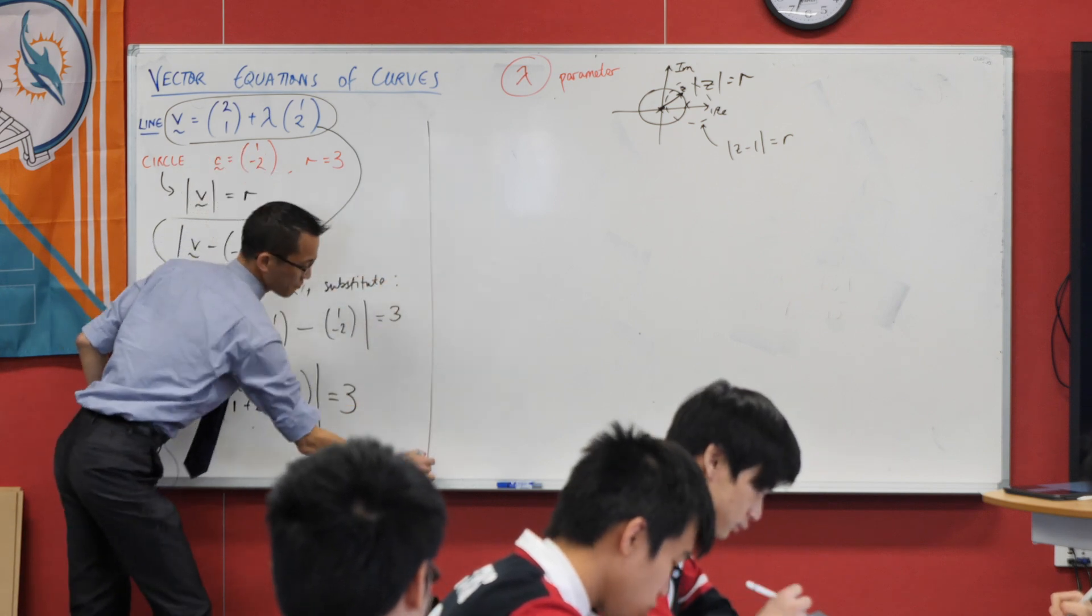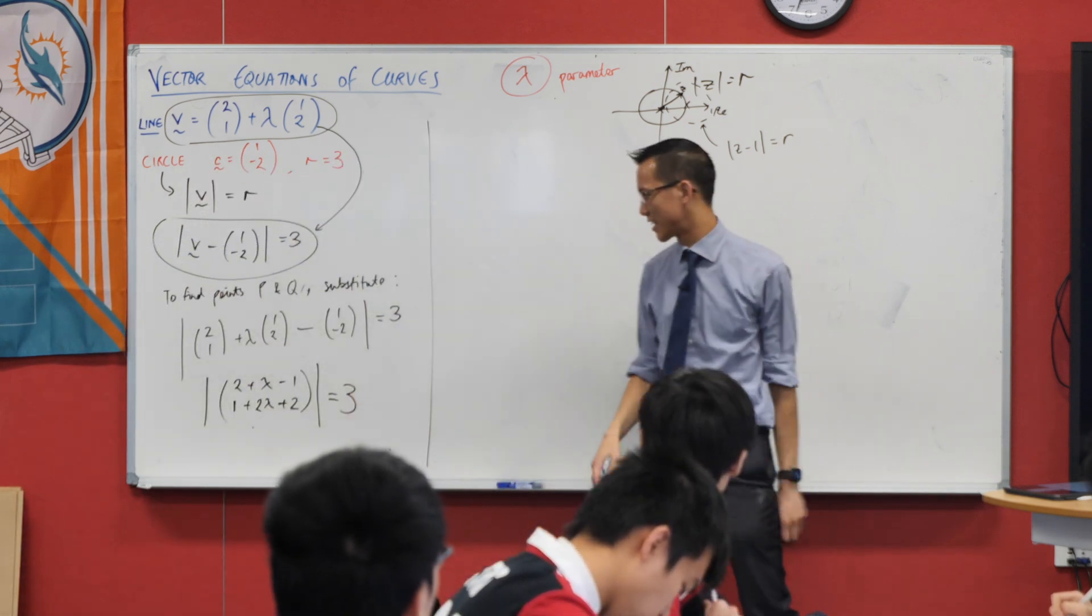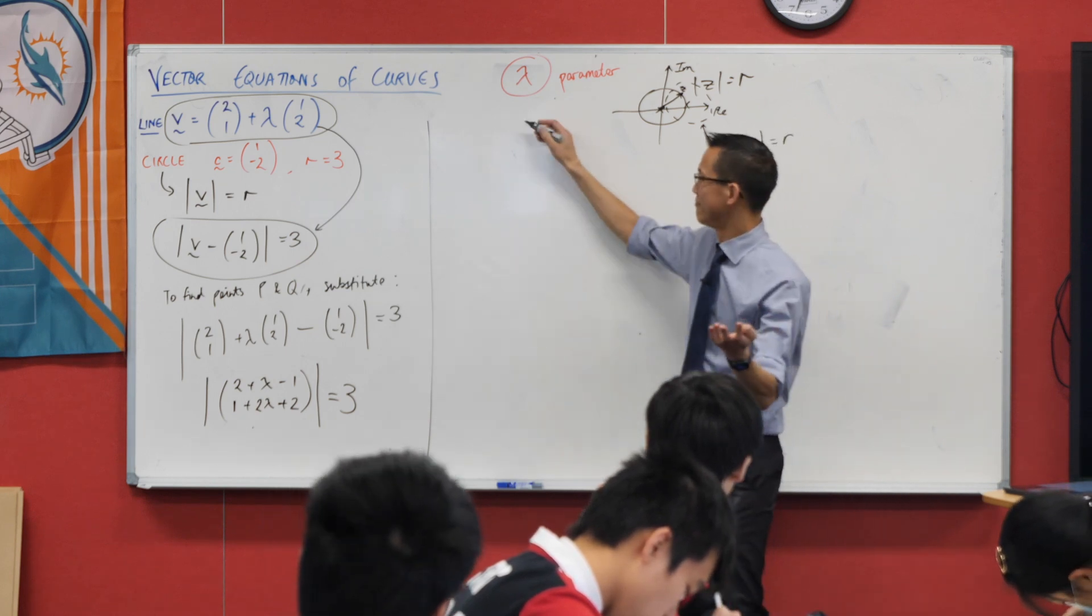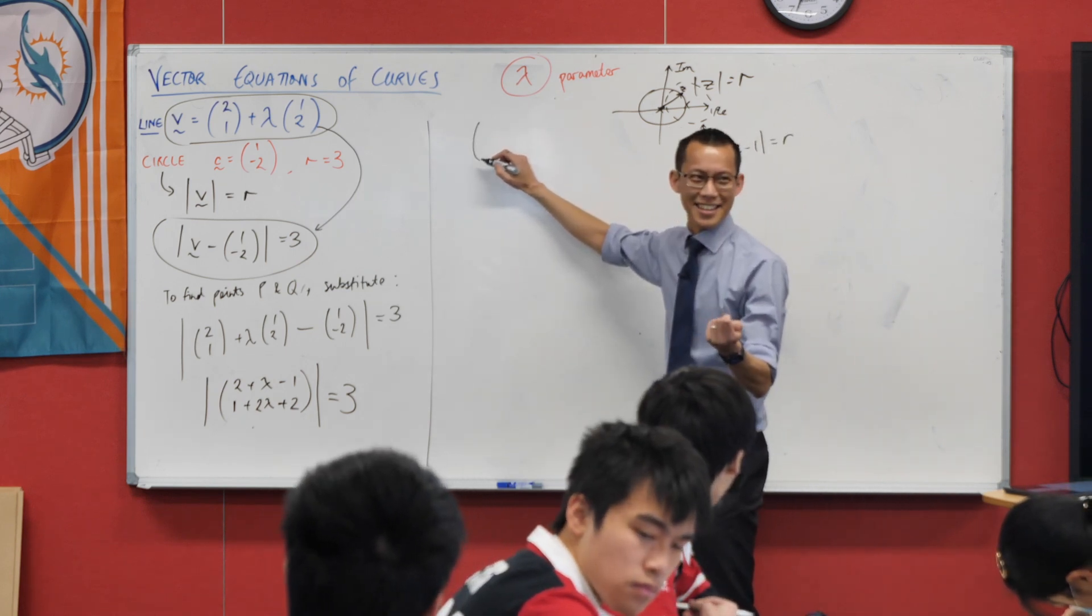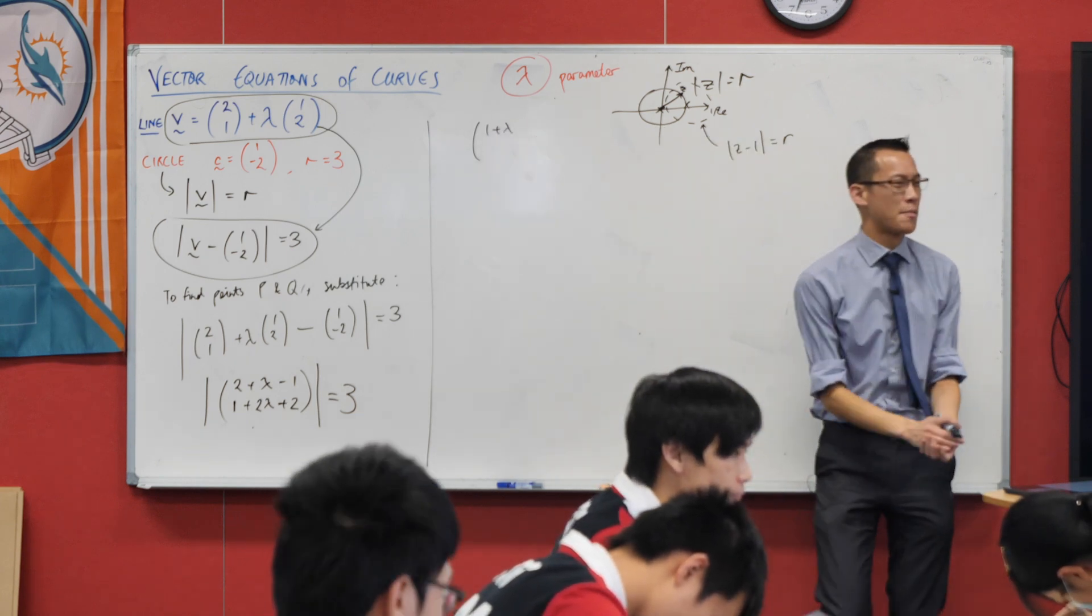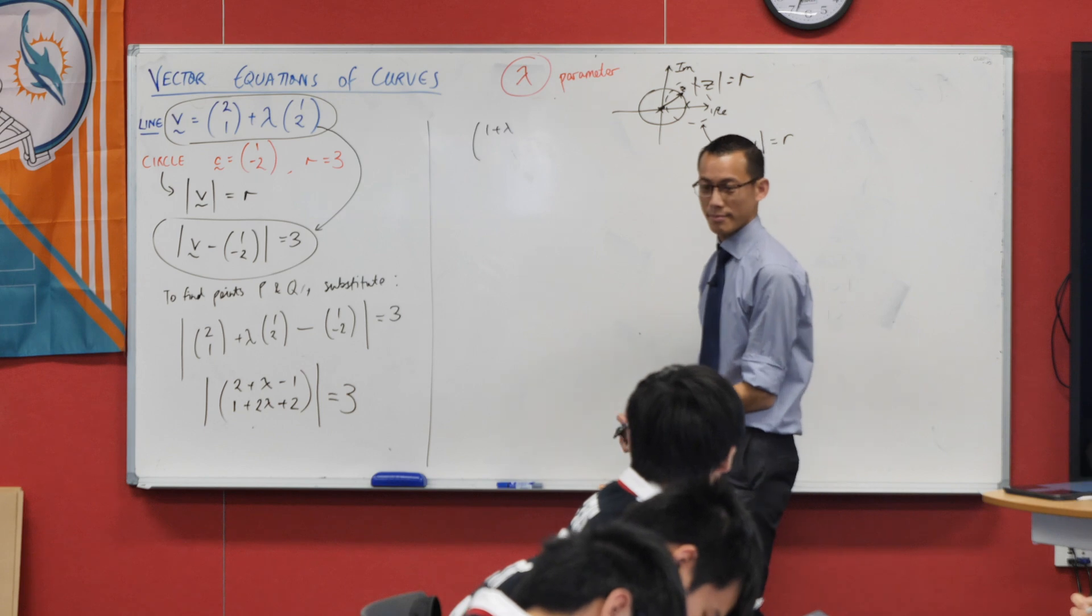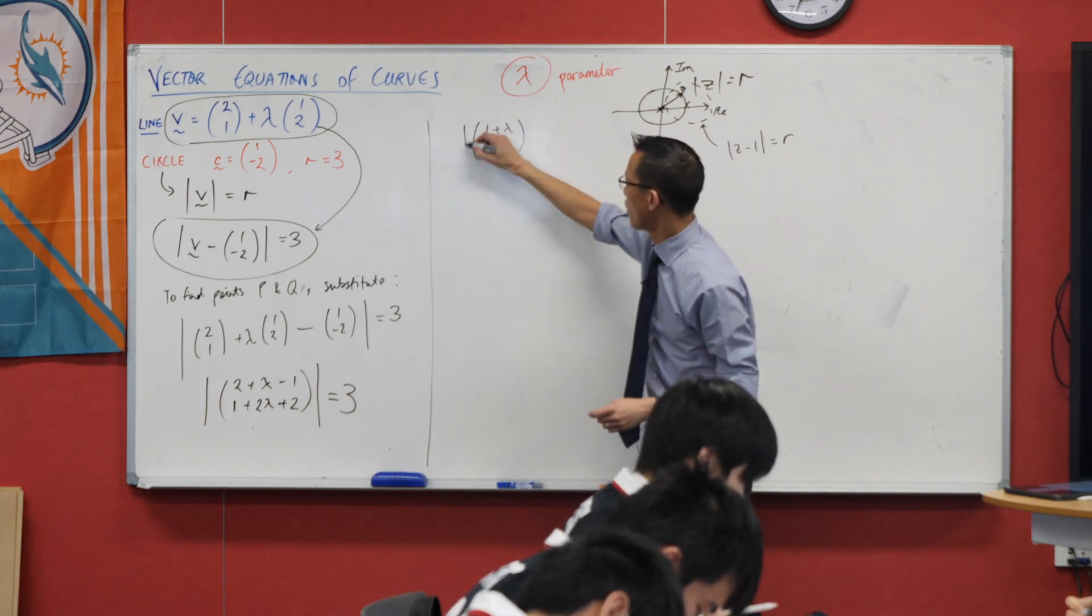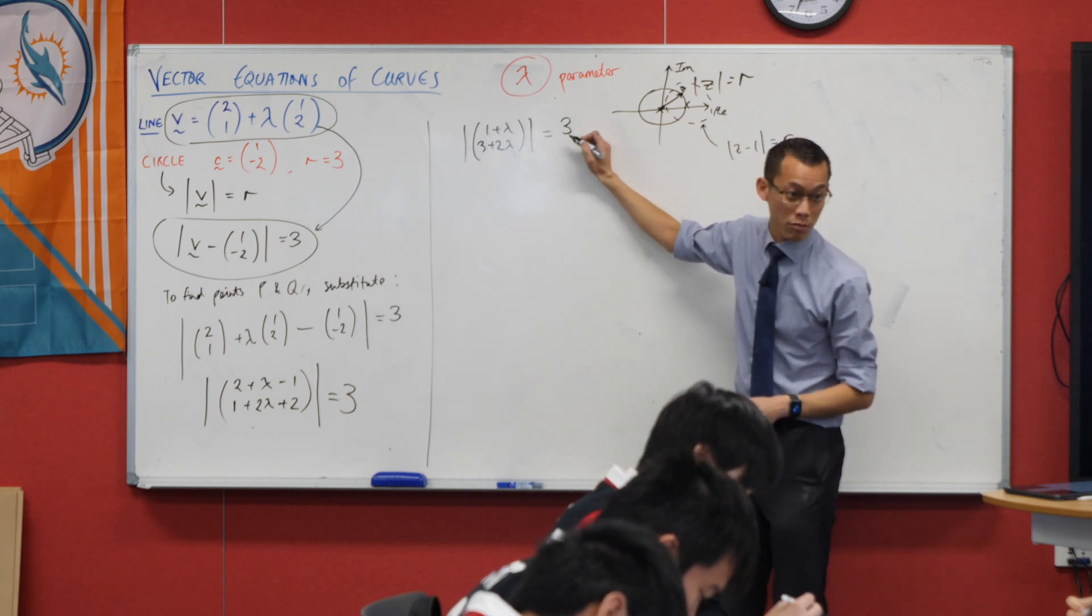All right, let's keep going. I can tidy this up a little bit. I can collect some like terms. 2 minus 1, I know it's the end of the day, we can get there. It's 1. 1 plus lambda. What am I getting from my y component? 3 plus 2 lambda. When I go to the distance to that vector, it should equal 3.